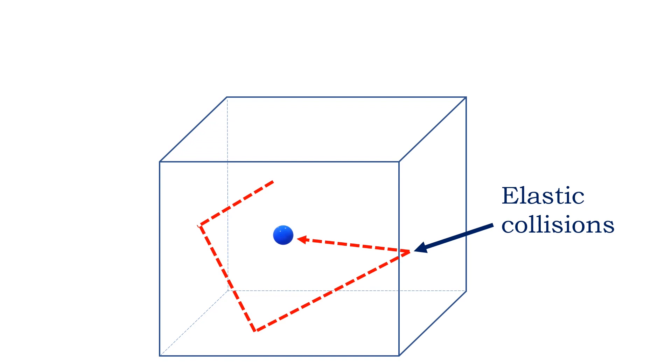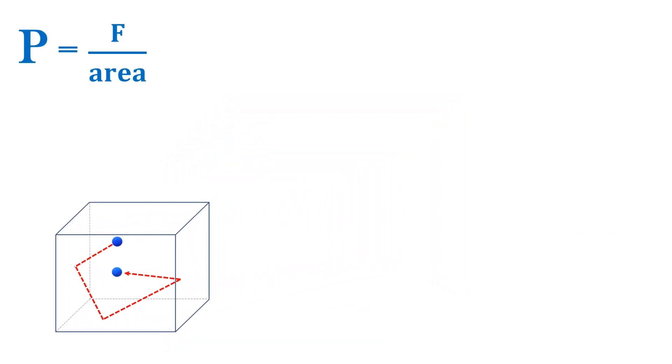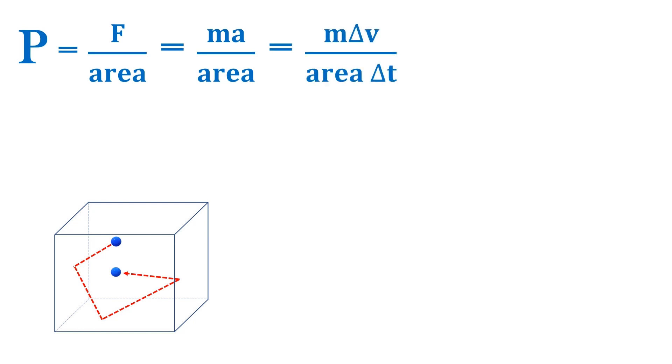Let's move our particle in a box over to the side and look at the pressure of a single gas particle. The pressure is the force per unit area. And from Newton's second law, force is mass times acceleration, and acceleration is the change in velocity over the change in time.